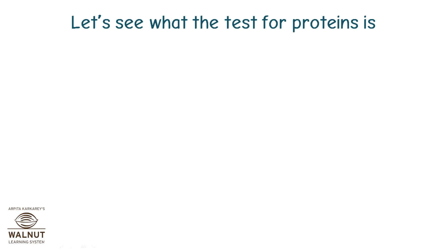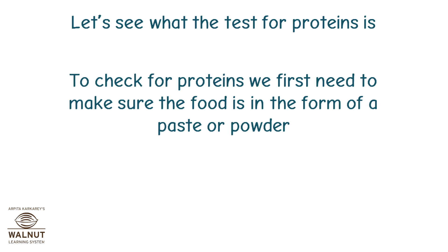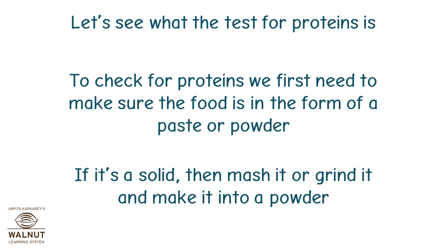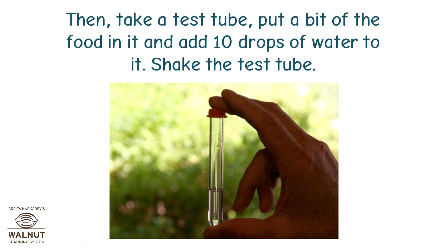Let's see what the test for proteins is. To check for proteins, we first need to make sure the food is in the form of a paste or powder. If it's a solid, then mash it or grind it and make it into a powder. Then, take a test tube, put a bit of the food in it and add 10 drops of water to it.